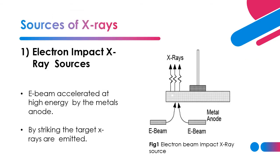There are two sources of X-ray that can be generated in X-ray lithography. The first is the electron impact X-ray source. In this method, to generate the X-ray, an electron beam is accelerated at high energy by a metal anode and then it strikes the target, and X-rays are emitted.